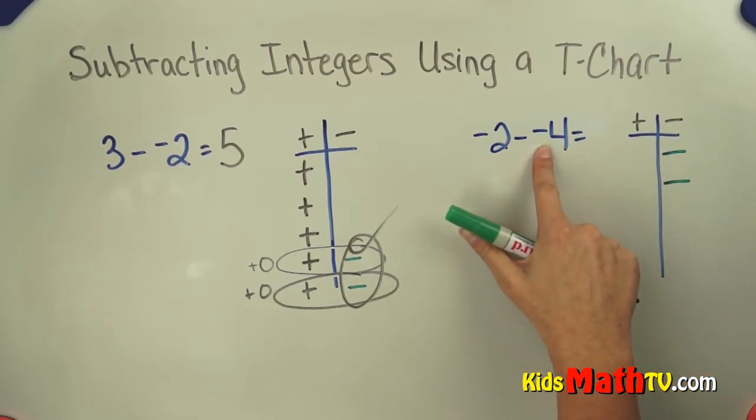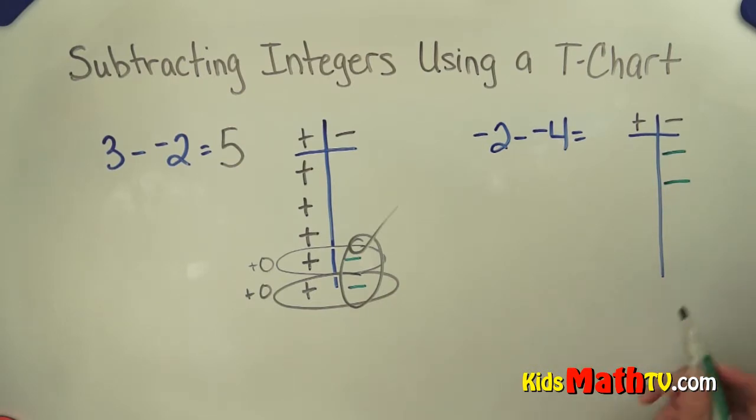I want to take away 4 negatives, but there are only 2 negatives here. So again, I'm going to create some 0's. I'm going to add 0, that's a positive and a negative. Now I have 3 I can take away, 3 negatives, but I don't have 4. I need another one.